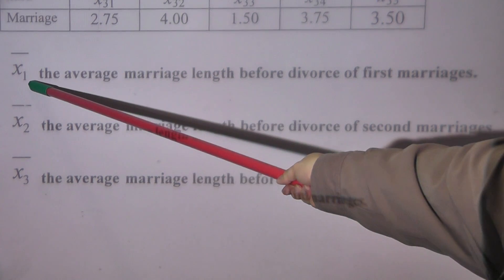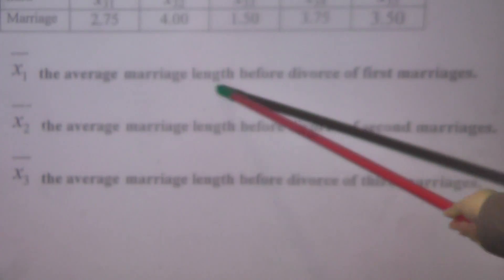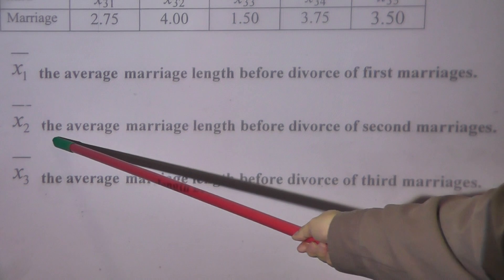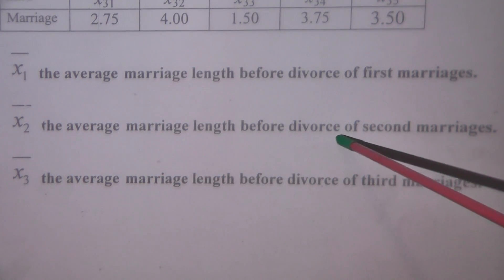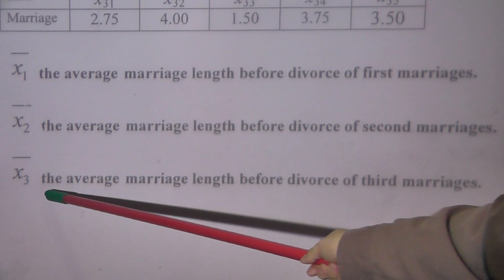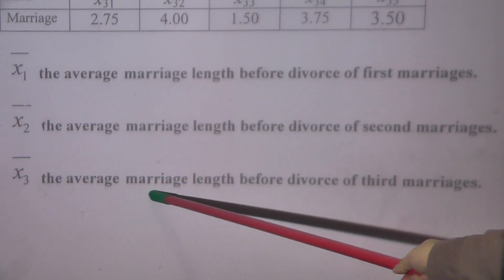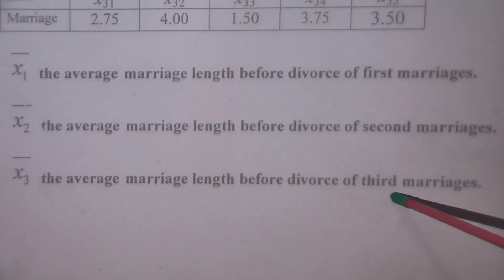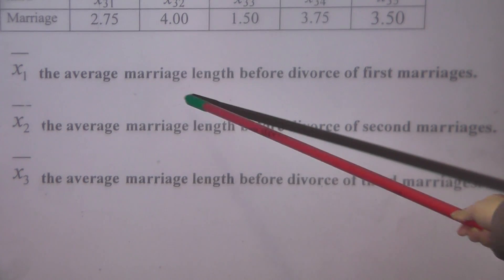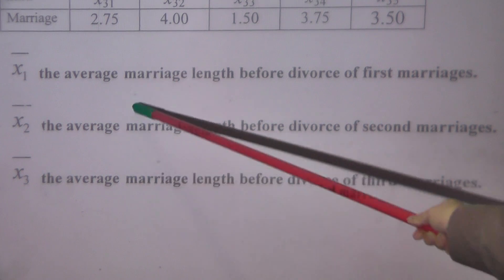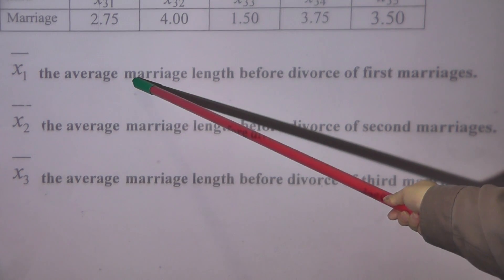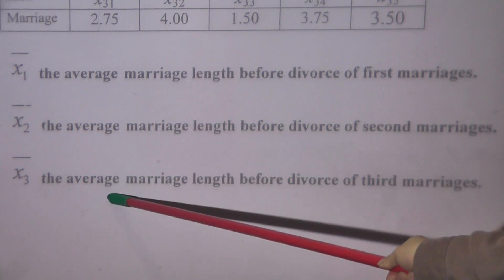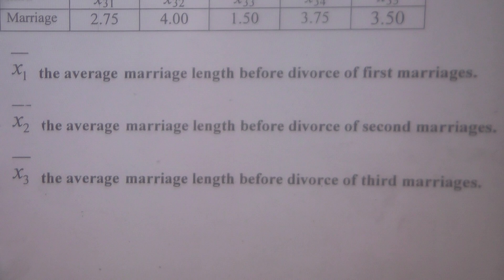x̄₁ (x one bar) is the average marriage length before divorce for the first marriages. x̄₂ is the average marriage length before divorce for the second marriages. x̄₃ is the average marriage length before divorce for the third marriages. These are all sample means — x̄₁ is the sample mean for the first population, x̄₂ for the second population, and x̄₃ for the third population.